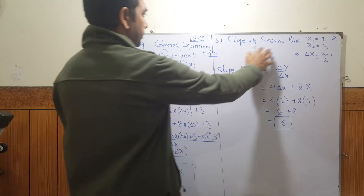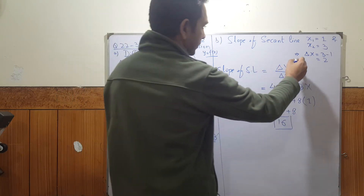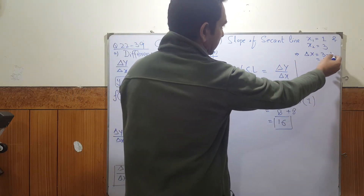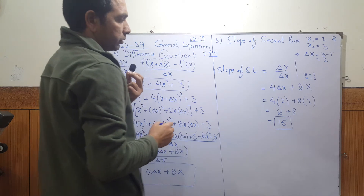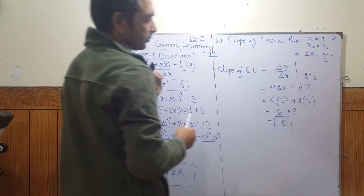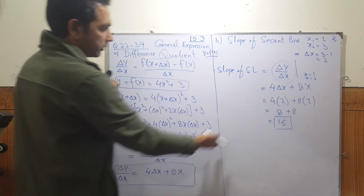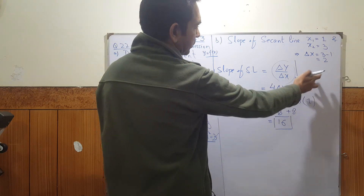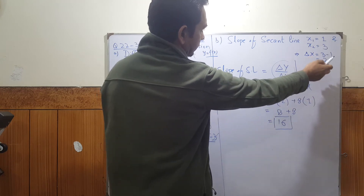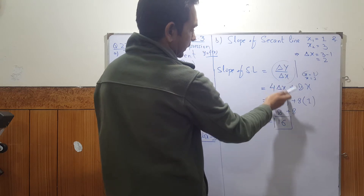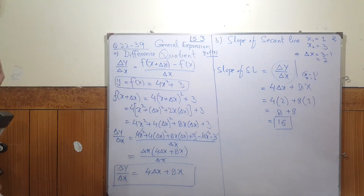Now for the slope of the secant line: the formula is the rate of change of y with respect to x at the given points x equals 1 and x equals 3. So delta x is 2. We use the general expression we already found, put x equals 1 (the first x value) and delta x equals 2. Calculating gives us 16, so the slope is 16.